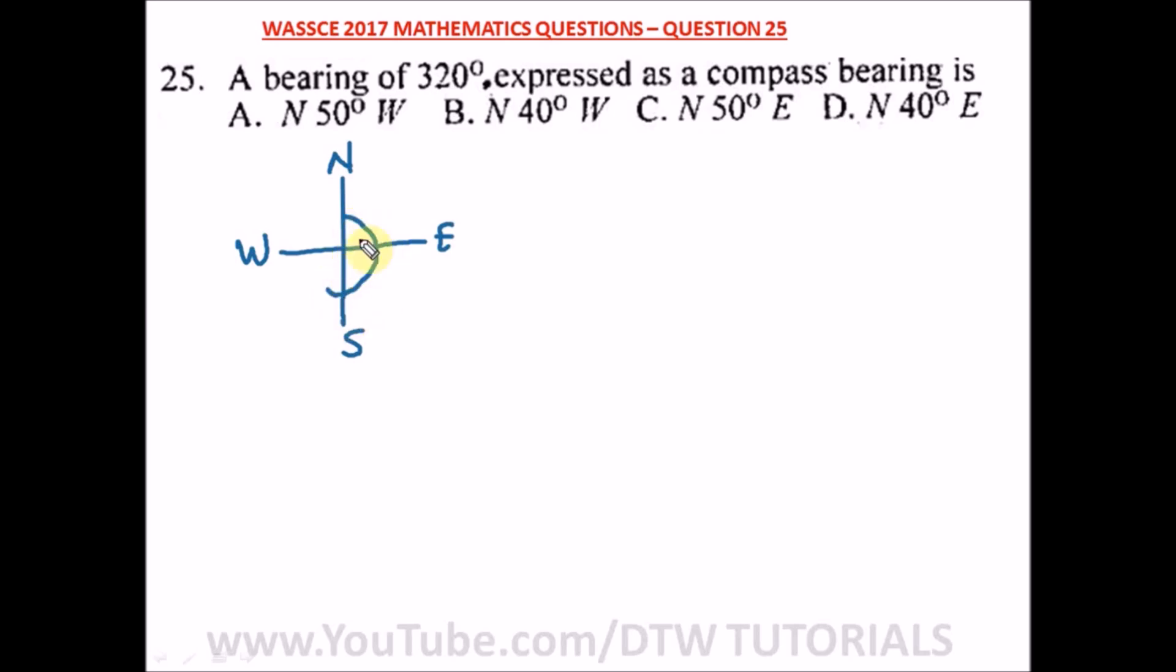The bearing says 320. So this is 90, this is 180, this is 270, so it has to cross here. It will be somewhere here where we have 320.